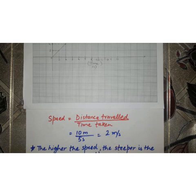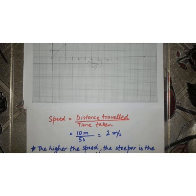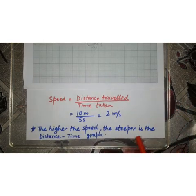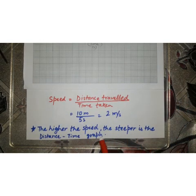Now, if you are going to compare these two examples, we can say that earlier graph was more steeper than this one because the speed of the body was 3 meters per second in earlier one while it is 2 meters per second in this one. So, the higher the speed, the steeper is the distance time graph.